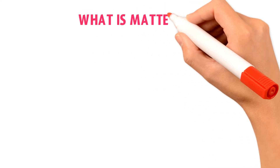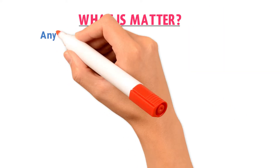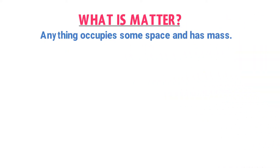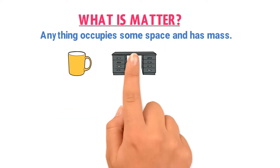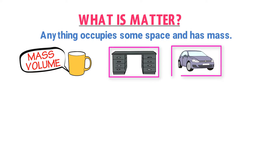Now what is matter? We all have learned in middle school that anything that occupies some space — meaning volume — and has some mass, is known as matter. For example, a cup, a desk, a car, etc. This cup has some mass and volume. Similarly, this desk and this car also have well-known masses and volumes. Thus, anything around us having some mass and volume is called matter.